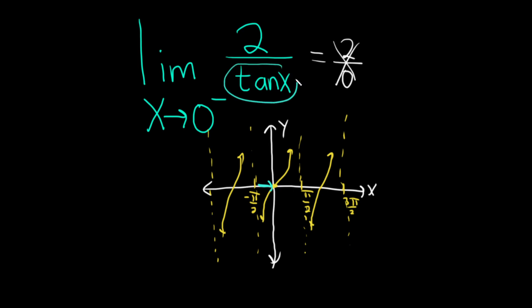What is happening to the y-value, that is tangent? Well, tangent is negative down here and it's small because it's getting really close to 0. So basically what's happening is you have 2 divided by a negative small number.